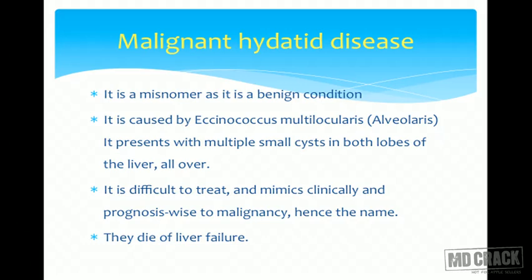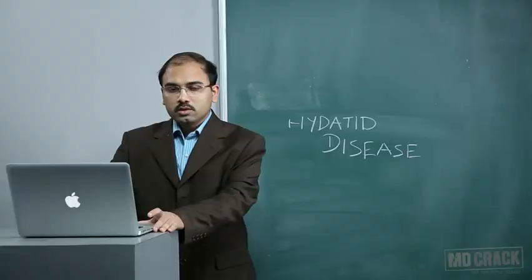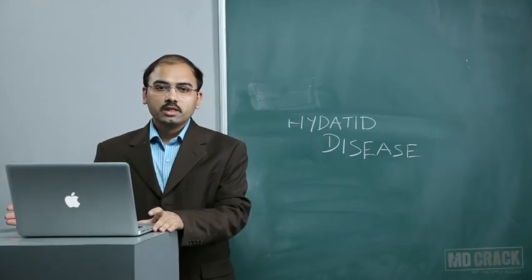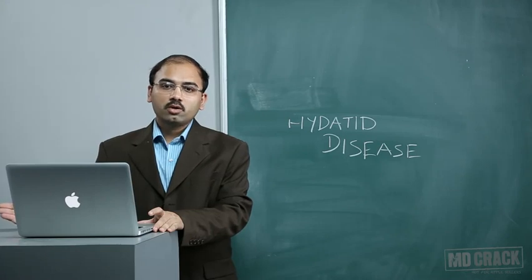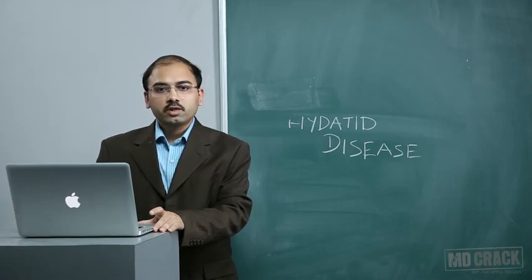Malignant hydatid disease is a misnomer, as it is essentially a benign disease caused by Echinococcus multilocularis (also called alveolaris). It presents with multiple small cysts spread over both lobes of the liver, is difficult to treat, and mimics malignancy both clinically and prognostically. Patients die of liver failure due to extensive hepatic involvement and associated fibrosis. Hydatid disease is much more common in India and other Mediterranean countries where sheep and dogs are found in cattle fields.